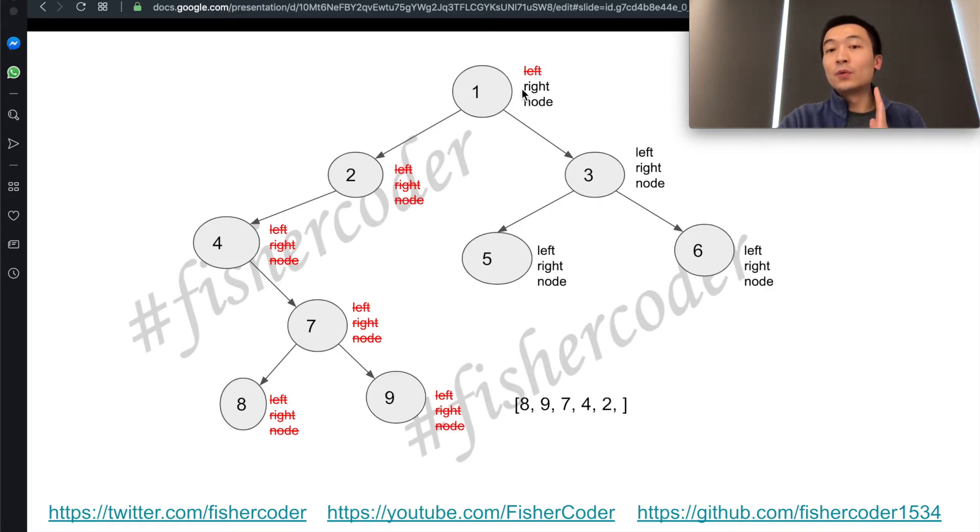Then it comes back to here. It will go to its right of 1. 1 is having 3 as its right child. So it will go to 3. Then 3 has a left. So 3 will go to 5.